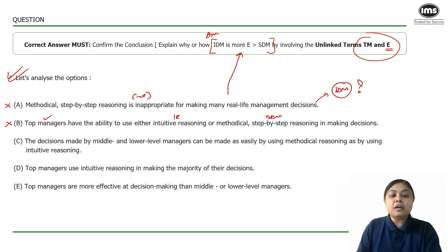Option C. The decisions made by middle and lower level managers can be made as easily by using methodical as by using intuitive. So this is just telling me that SDM plus intuitive reasoning can be used to make decisions of middle and lower level. But what is the basis of the main premise? Is the focus on middle and lower level managers or is it on top managers? It is on top managers. The argument is trying to prove that intuitive is more effective. If middle or lower level is using intuition as well as methodical, that does not fall under the purview why IDM will be more effective than SDM.